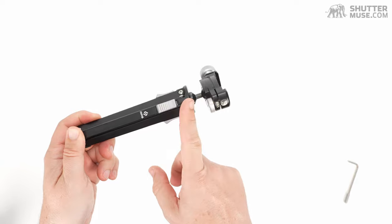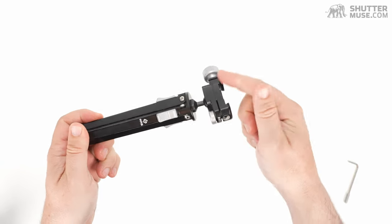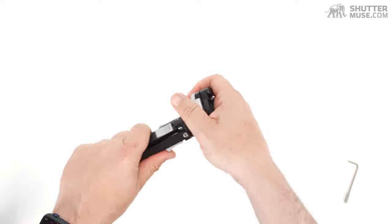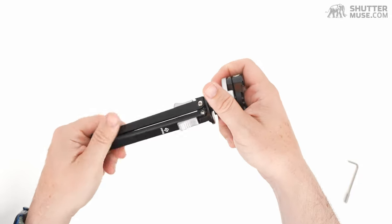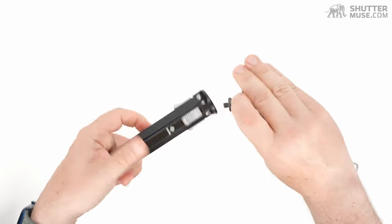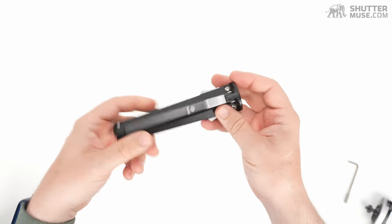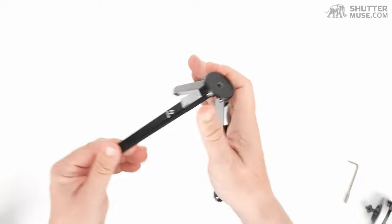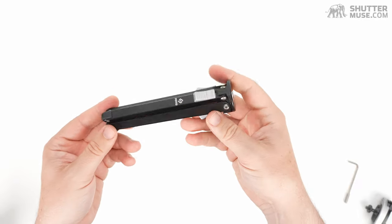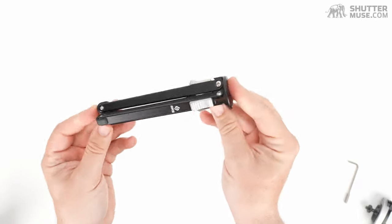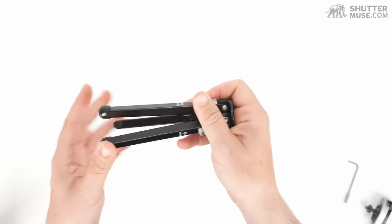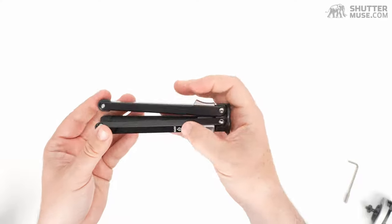So $120 for the tripod. I believe the combination with the BC-18 head is around the $280 mark. A lot of people are going to gasp at that price and say, Dan, you can get a full size tripod for $120. I mean, yeah, sure you could, but it's not going to be as durable. It's not going to be as strong. It's not going to be as well made as this tripod. You know, as with most Really Right Stuff products, you buy this thing once in your lifetime, in your career.